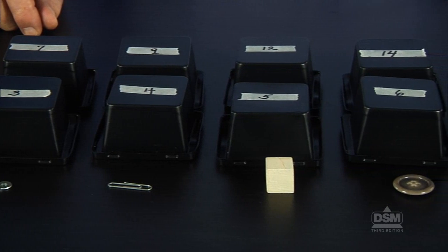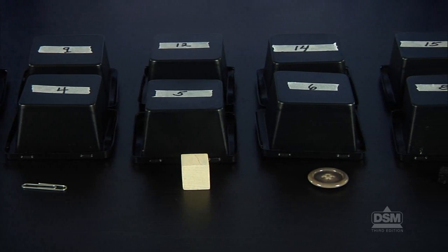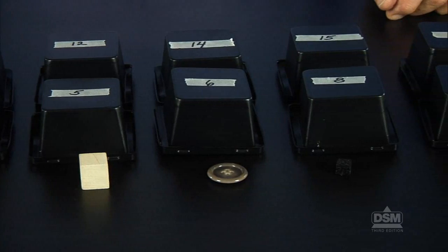Wooden cubes in boxes 5 and 12, buttons in boxes 6 and 14, foam pieces in boxes 8 and 15, and rubber stoppers in boxes 11 and 16.